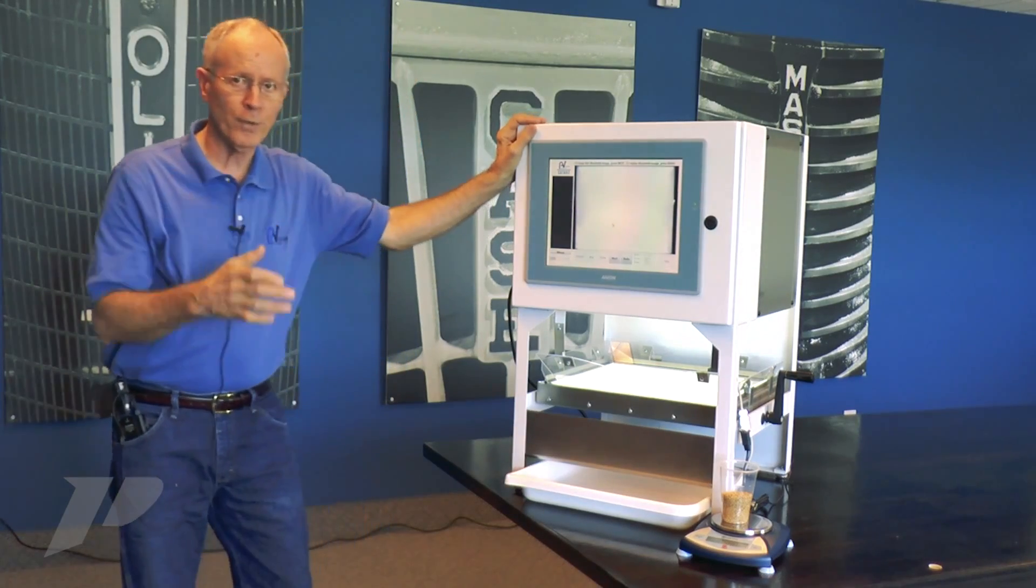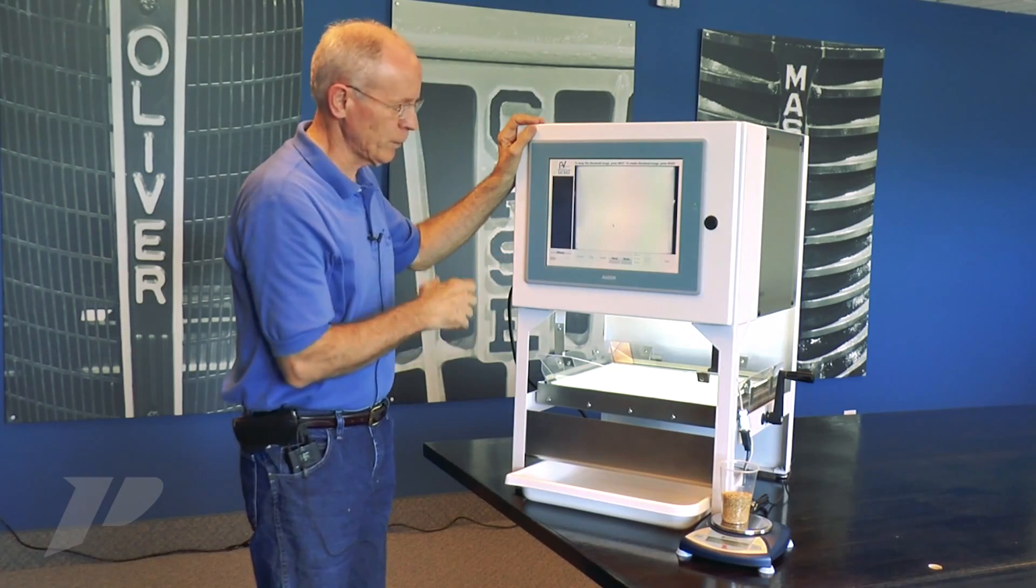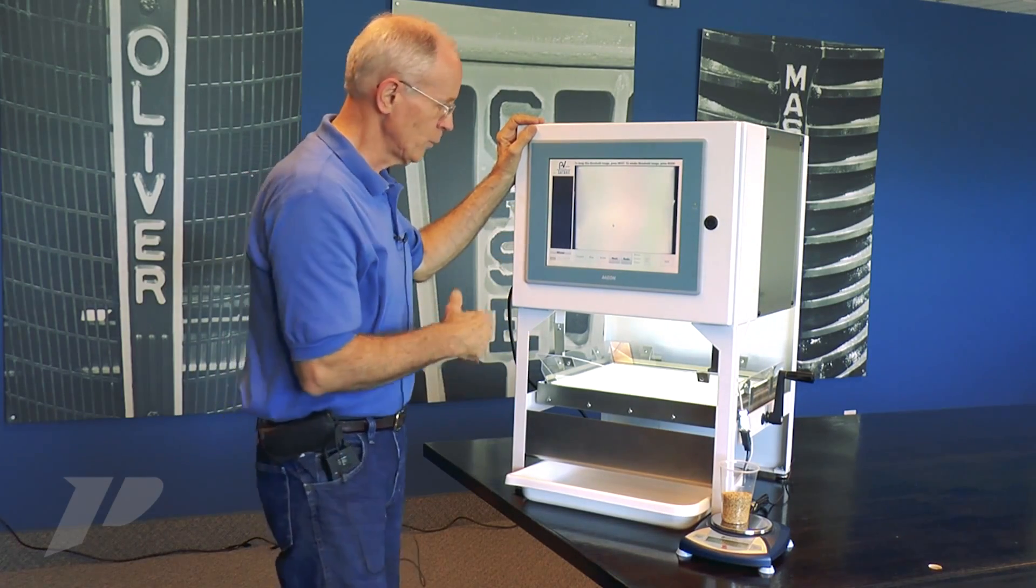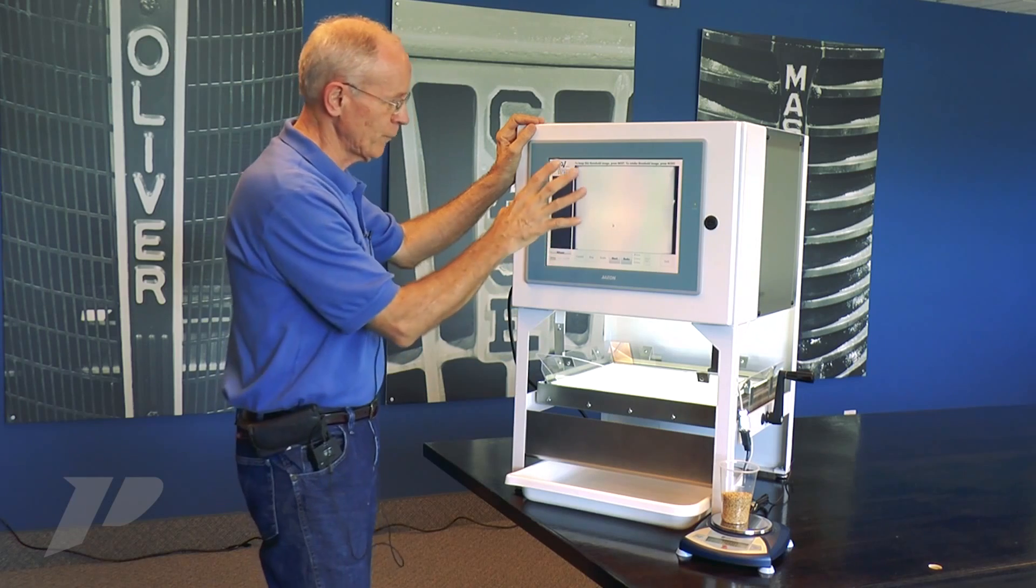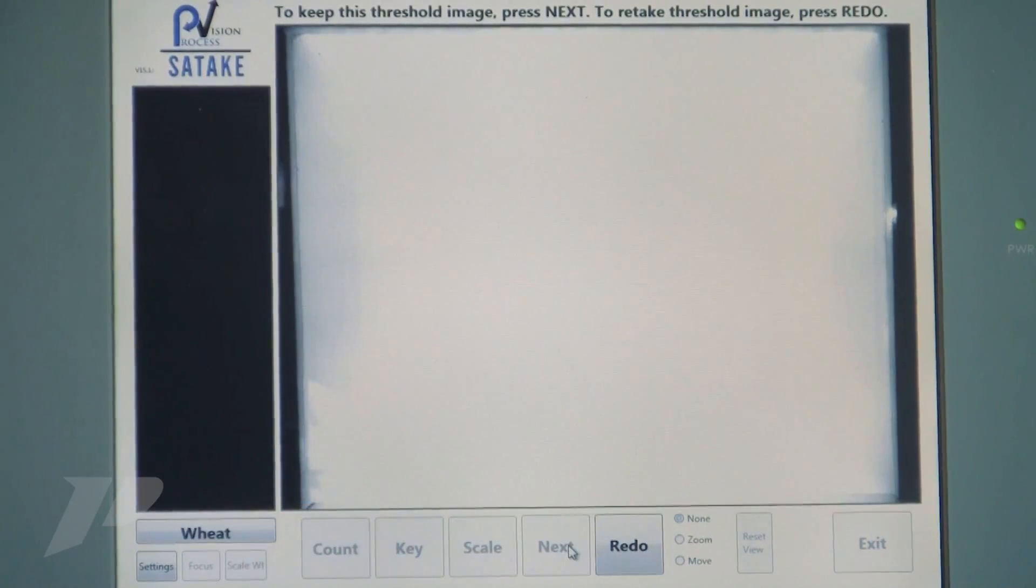In vision, what we want to do is compare nothing to something. Nothing is what we have without the product. Something is what we take the picture with the product. We're going to look at the difference between those two, so we need to have a good background image for that. That's what we have here. I'll click next to accept that background image.